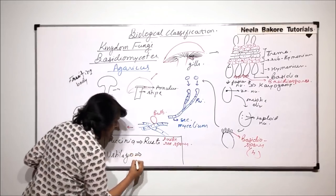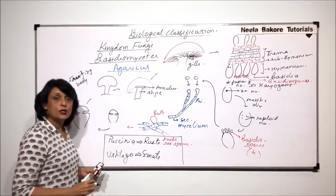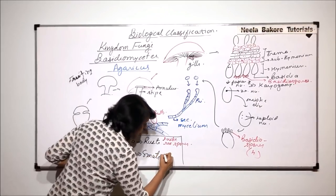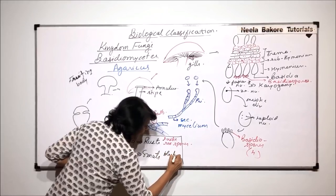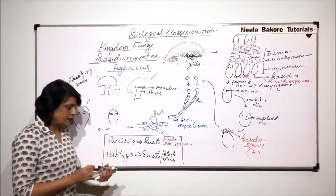Eustilago causes diseases which are normally called the smuts. And in case of smuts, the spores are black spores. And that is why the disease is known as smuts.